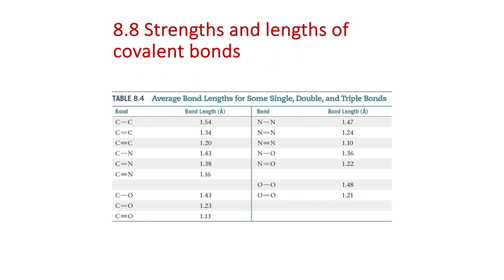Hopefully looking at those calculations drives home the message of what the resonance effect really is: it's the averaging out of the Lewis structures we can sketch. The Lewis structures we're writing are just a model, and the question is whether the model actually matches reality. When you have one Lewis structure, it matches reality really well. When you have two equivalent yet different Lewis structures, the reality is more of an average or composite of the two.